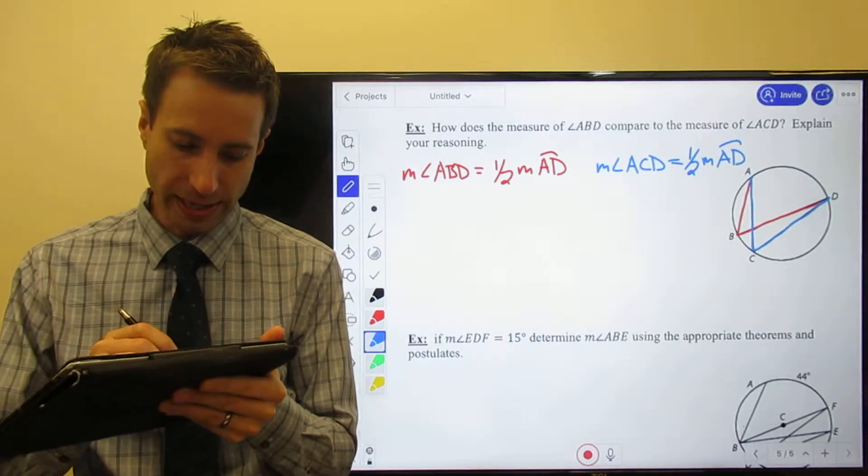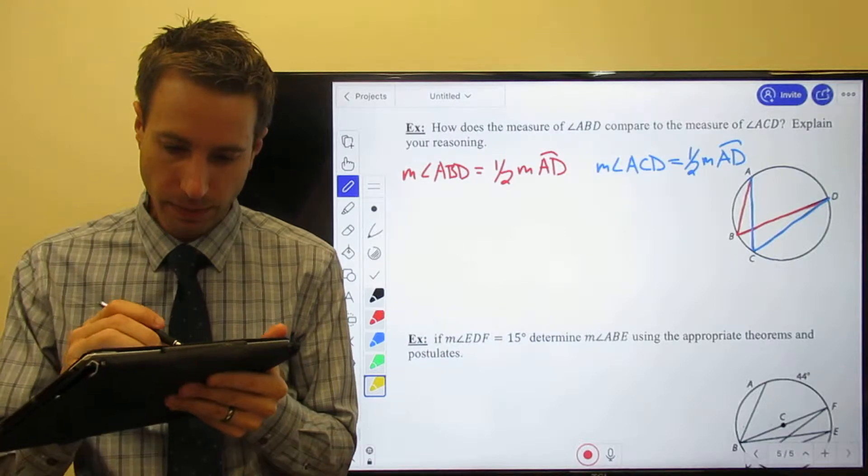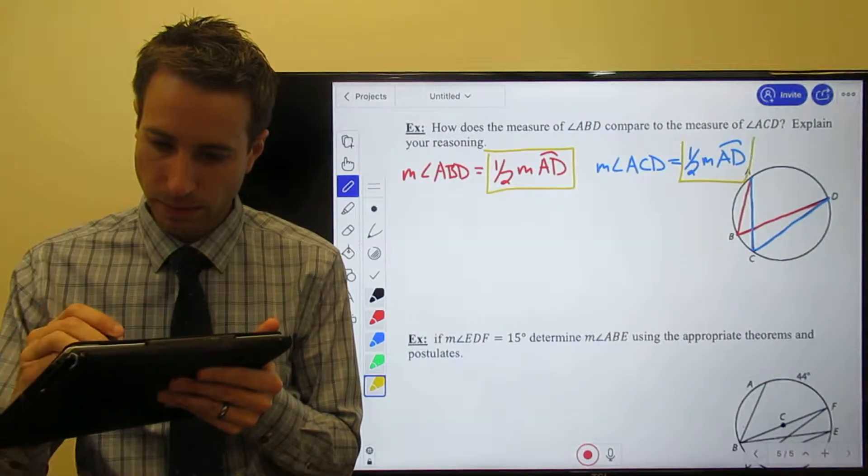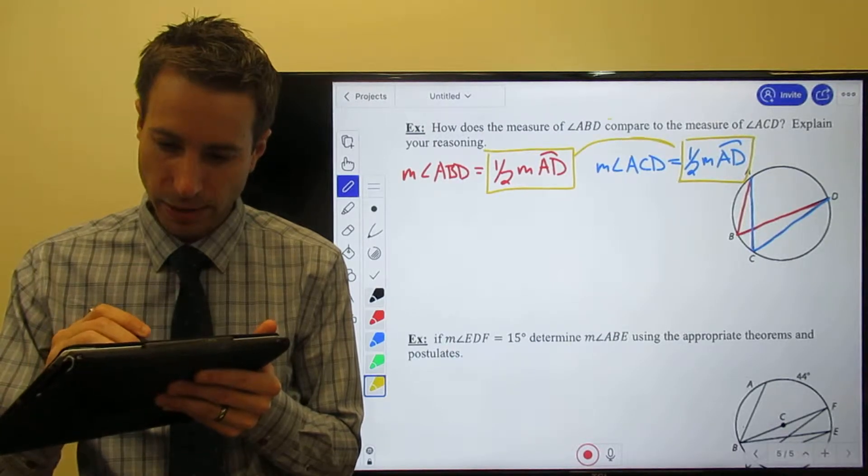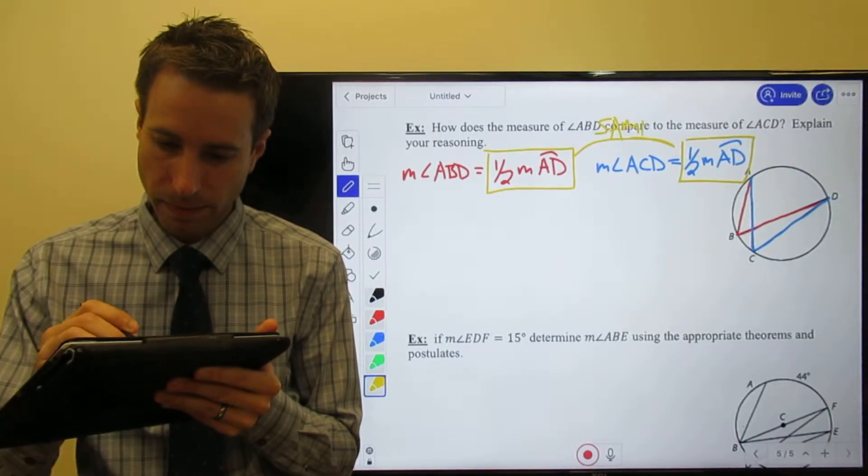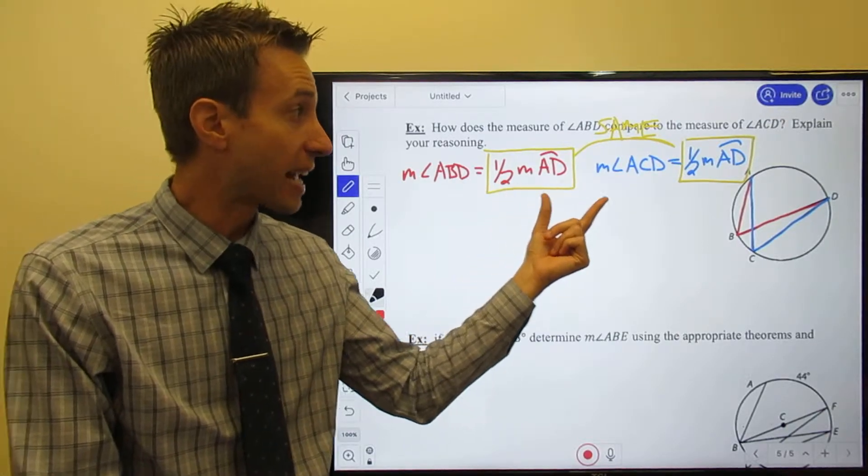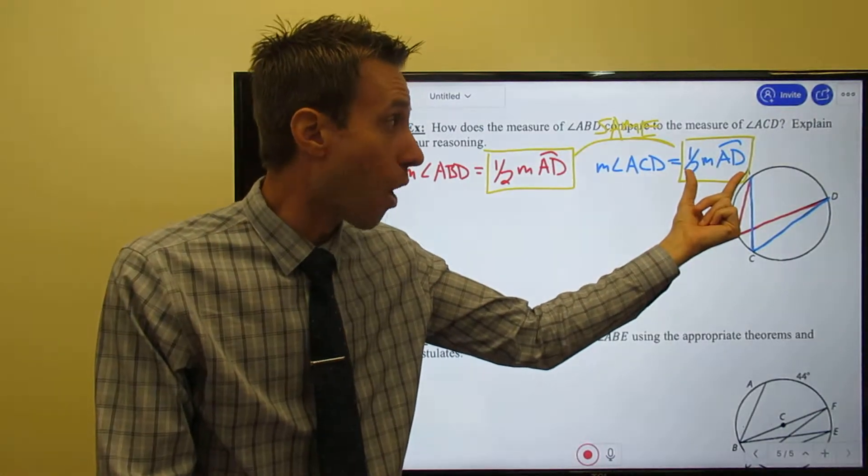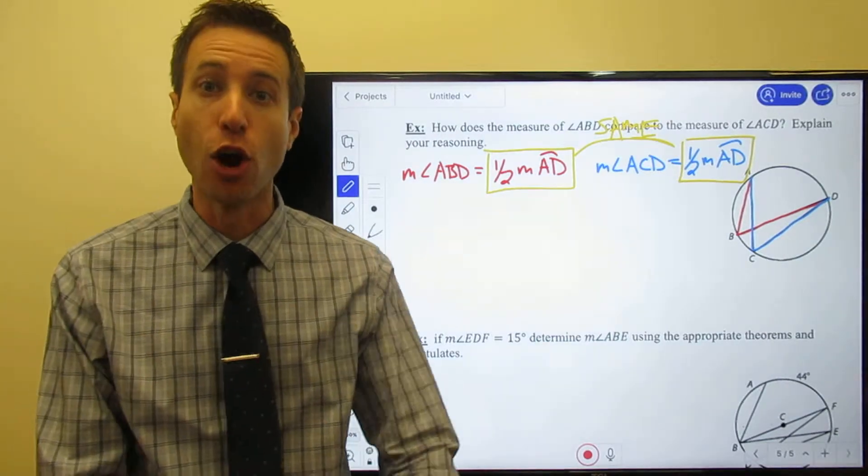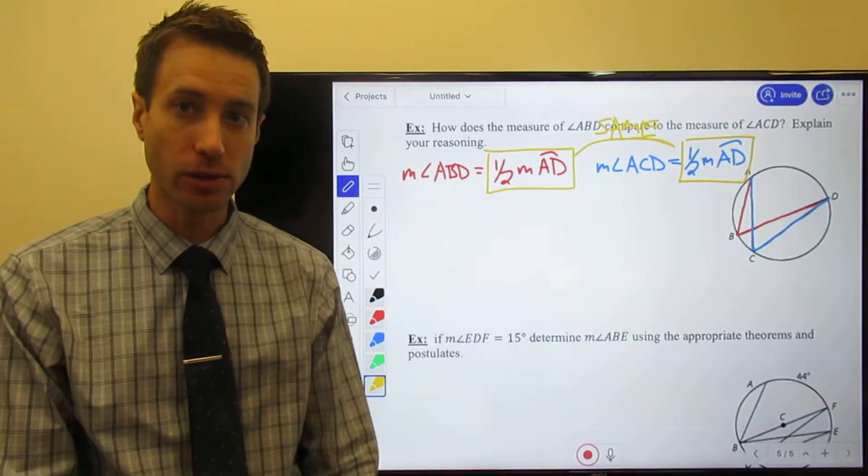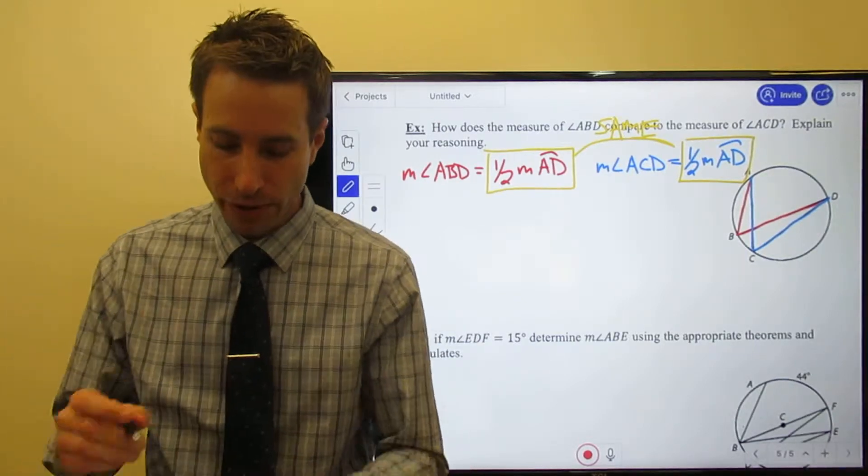Well, look at this, guys. These are the same, right? Since one half the measure of arc AD is equal to one half the measure of arc AD, what do I now know about these two angles? They're equal to each other.